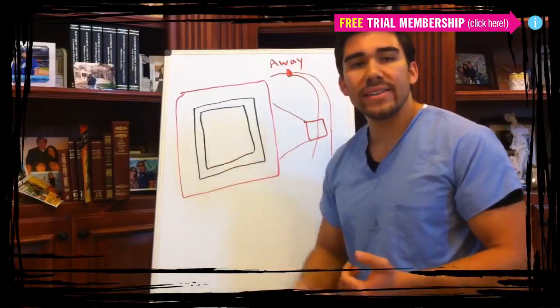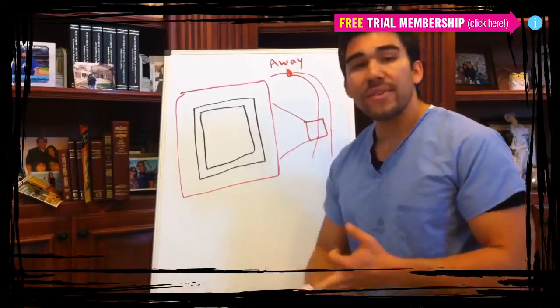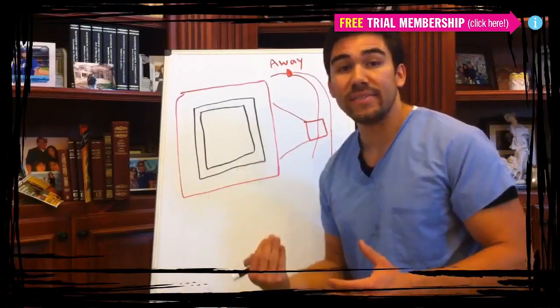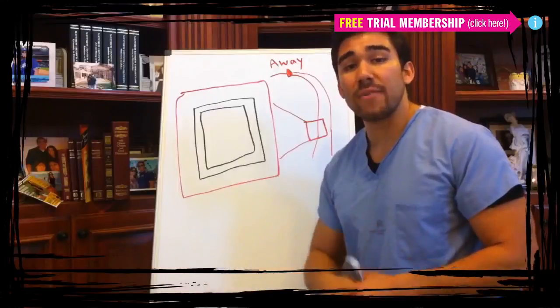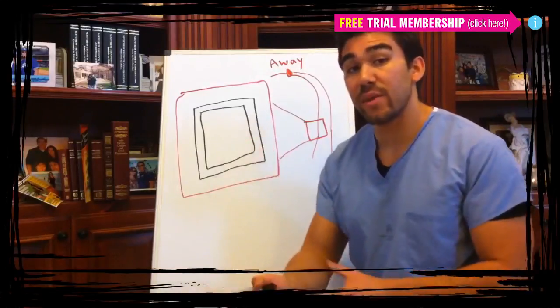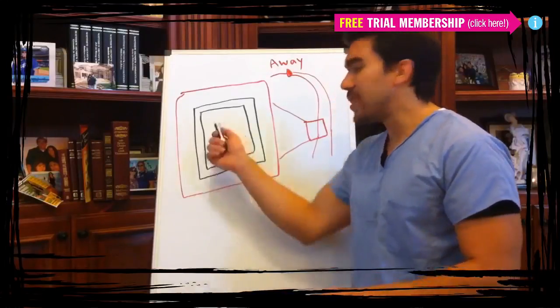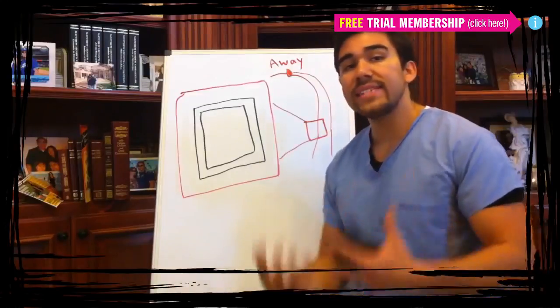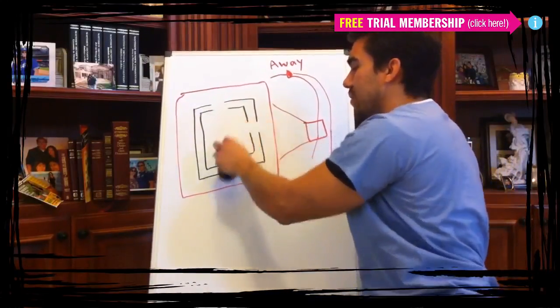Every cell has a city hall where all the decisions are made. Every cell has a cleaning department which really cleans up the city, also known as the trash department. Every cell has kind of a post office that sends messages out and receives messages, kind of like a post office of your city. But the big thing right now we're talking about is the city gates. And these gates are called channels of your cell.